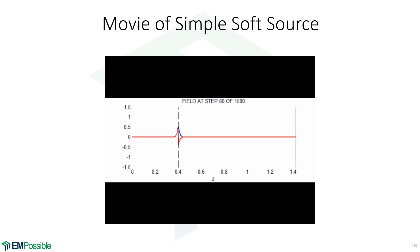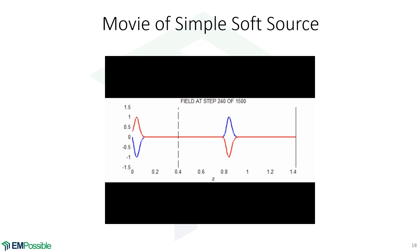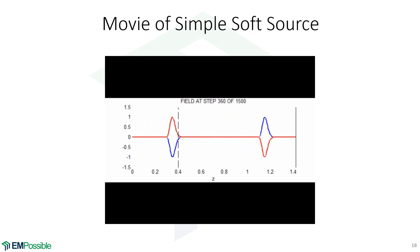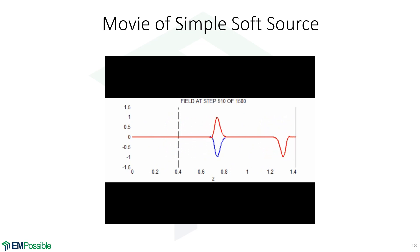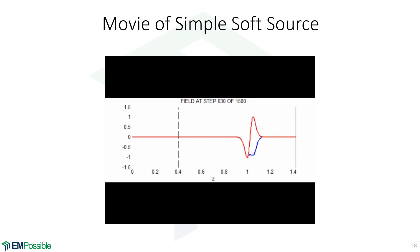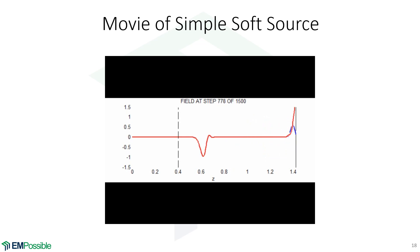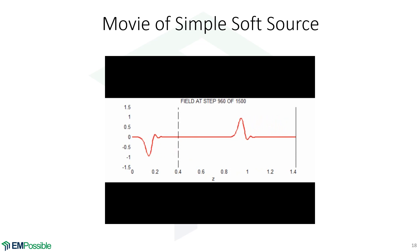In contrast is the simple soft source. Rather than overwriting a field value, we add to whatever is already there. Now when pulses reflect, they're free to pass right through the source point. As far as I'm aware, all sources in finite difference time domain are always simple soft sources. I'm not really sure how to use a hard source and get it to work well.